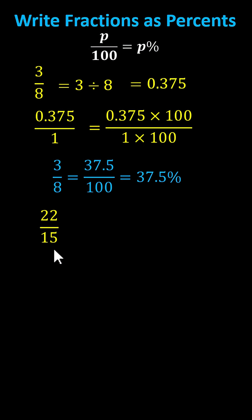Next, we have 22 fifteenths. We'll first convert to a decimal by dividing 22 by 15. In this case, we get a repeating decimal, 1.466 with the 6 repeating.